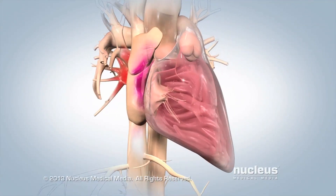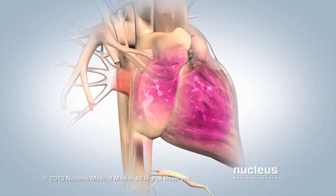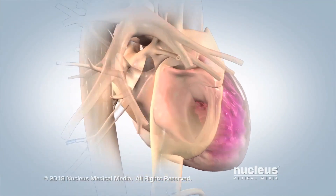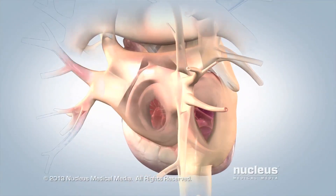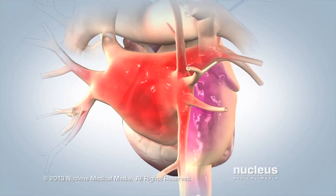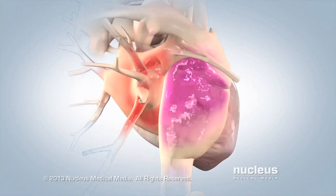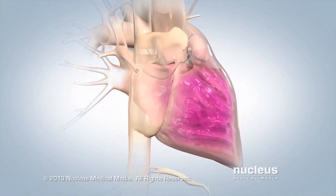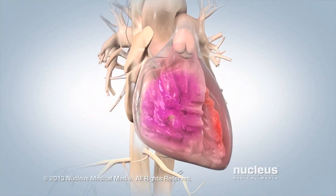During a normal heartbeat, blood from your tissues and lungs flows into your atria, then into your ventricles.